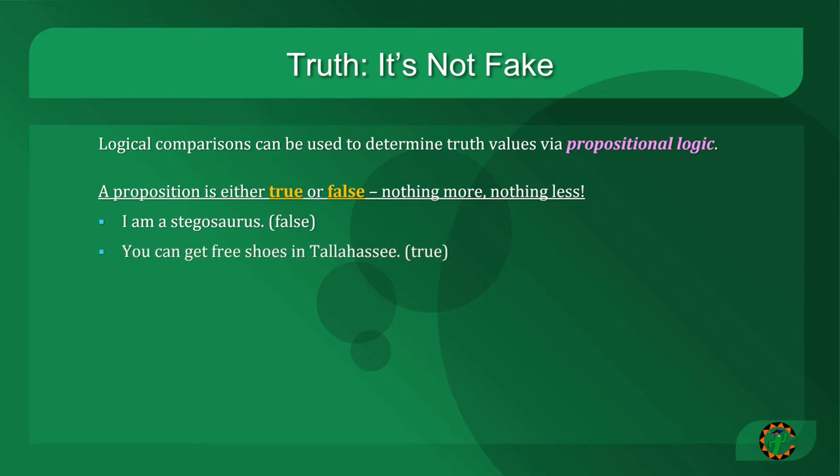I hear there's a school there known as Free Shoes University. The proposition 10 is greater than 9,000 is false. But the proposition I to the power of I is a real number is true, and you can look that up.